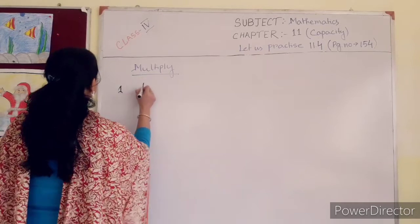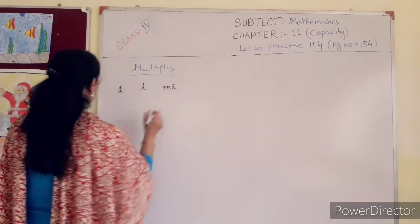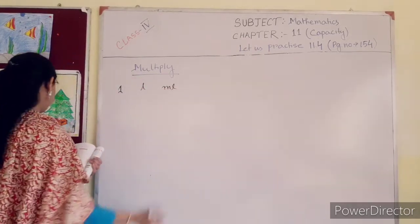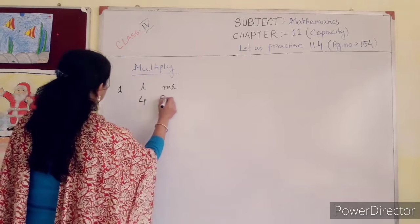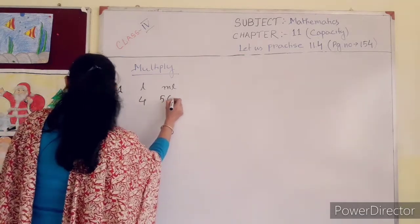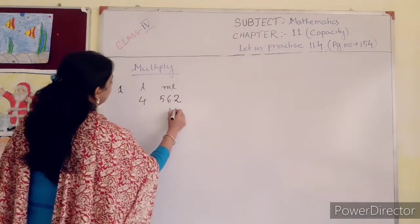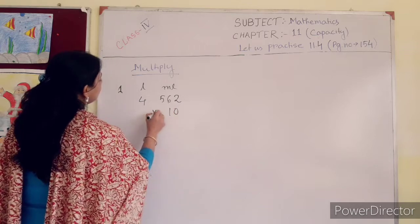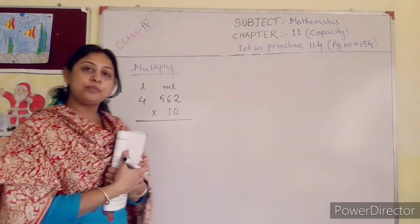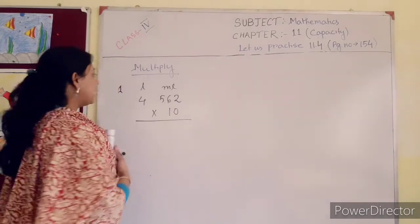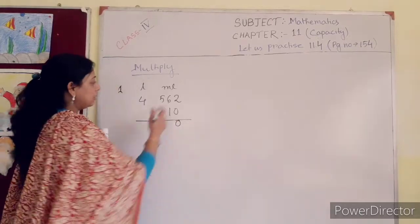Liter, milliliter. 4 liter, 562 ml. Multiply it by 10. All of you know the table of 10. 10 into 2 is 20. 2 is in your hand.